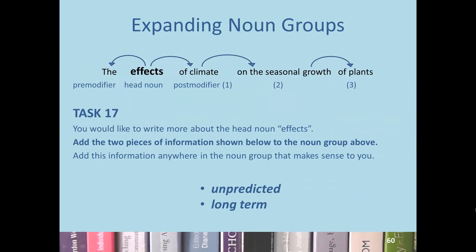Now let's expand the noun group further. For task 17, imagine you'd like to write more about the head noun 'effects.' Add the two pieces of information — 'unpredicted' and 'long-term' — anywhere in the noun group that makes sense. Pause the video here and please try this out.